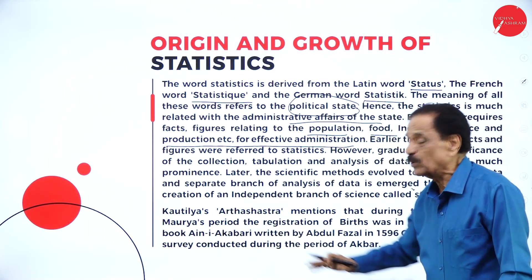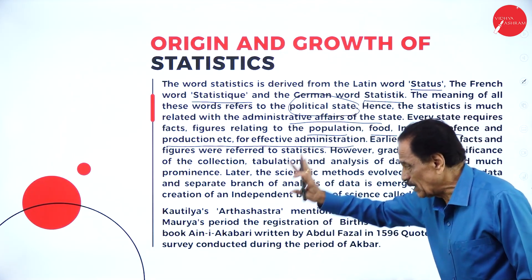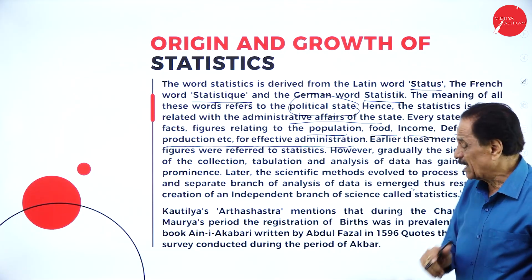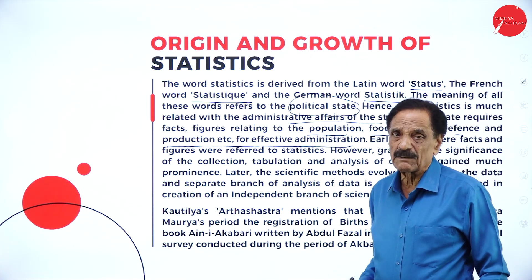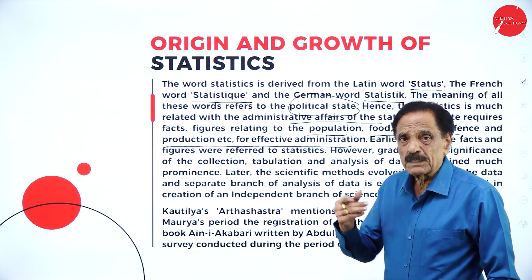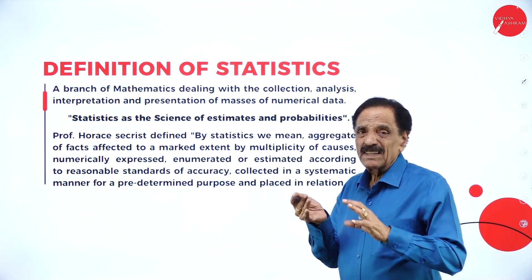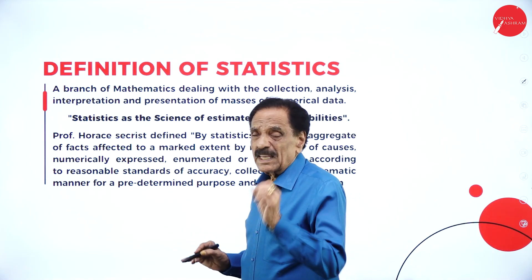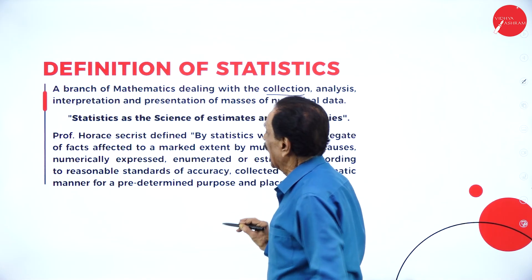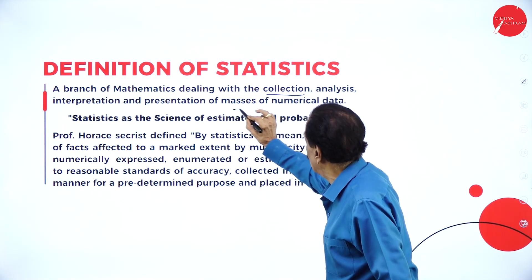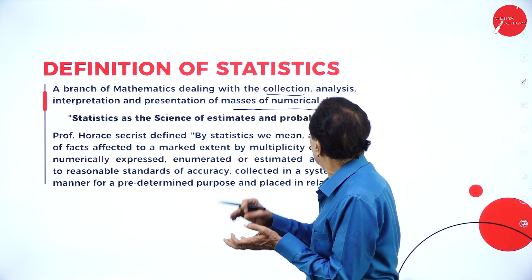During Chandragupta's time, Kautilya — a famous mathematician and administrator — wrote about the facts and figures of the country. Even during Akbar's reign, books recorded facts and figures on population and income. As everything was analyzed, a clear definition emerged: statistics is a branch of mathematics dealing with the collection, analysis, interpretation, and presentation of masses of numerical data.